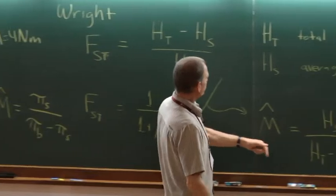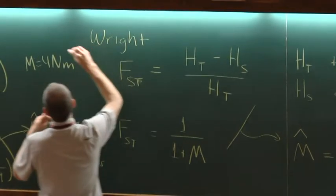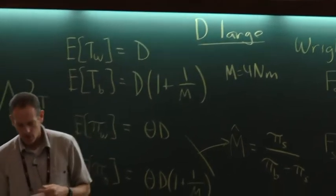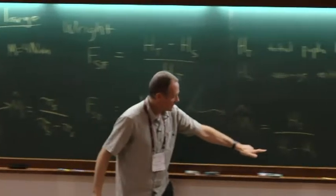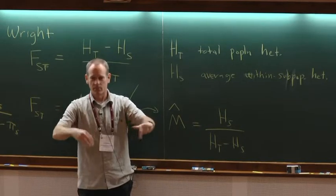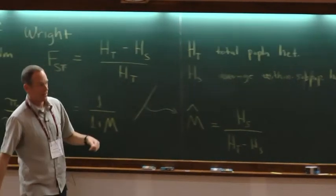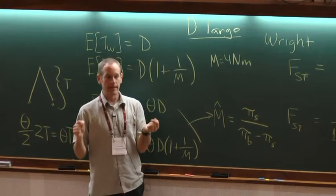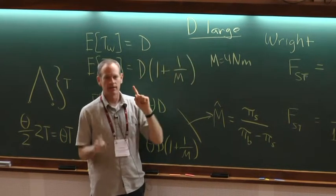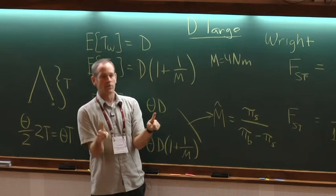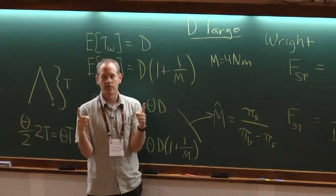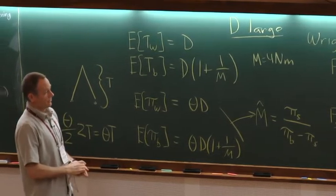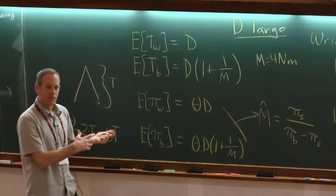So pi_T is the total — as if you had taken the population, put it all in one bin, and mixed it up. To calculate pi_T, I would need some average of pi_W and pi_B. But when D is large, if I take a random sample of two sequences, almost all the time they're going to be between-population samples. That's the connection between B and T. Anyway, I just wanted to mention that to make a connection to how data are analyzed when you plug data into a program and it calculates 4NM using sequence data.